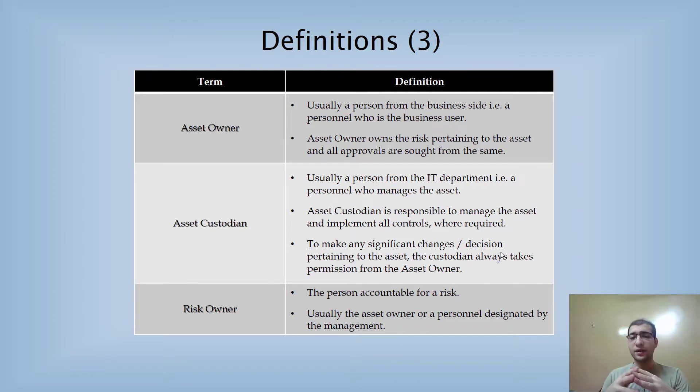Risk owner is the person who is actually accountable for a particular risk. The risk owner is usually the asset owner themselves, but it could be someone else as well if appointed by management. This particular person is responsible and accountable for all the risks for which that person is assigned.